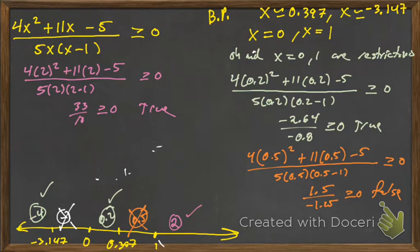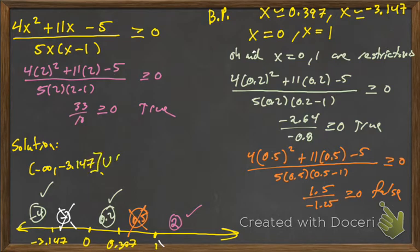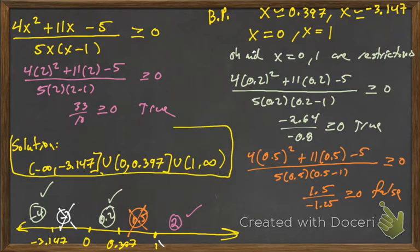So now we do our true intervals: from negative infinity to negative 3.147 with a bracket. Union — 0 is a restriction, so no bracket there — bracket at 0.397. And 1 is a restriction, so no bracket there, then on to the next true interval.